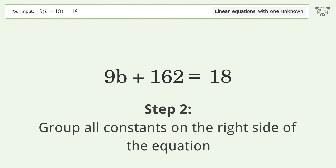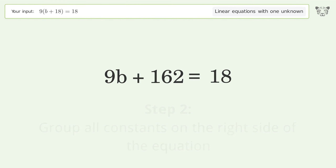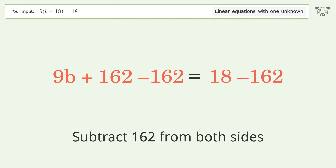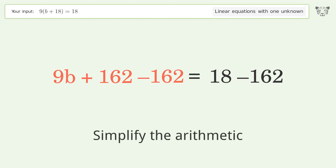Group all constants on the right side of the equation. Subtract 162 from both sides, then simplify the arithmetic.